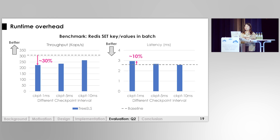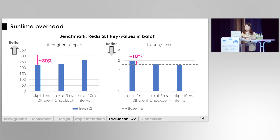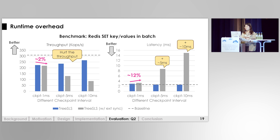Stop-the-world checkpoint is not the only cost. Since we asynchronously copy pages during runtime, this also introduces overhead. We show the runtime overhead by running a SET benchmark on Redis. The baseline is the system running without any data persistence. Compared with it, our checkpoint with a one-millisecond interval introduces acceptable overhead. Also, if we enable external synchrony — delaying each response by one checkpoint interval — latency increases by around one checkpoint interval and hurts overall throughput. But for current mainstream microsecond-scale applications, our one-millisecond delay has a minor impact on performance.